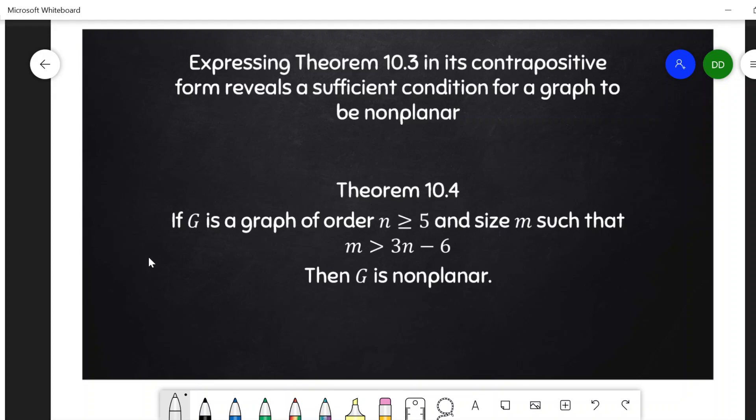So this is nice. In this case, in particular, we can show k5 is not planar. n is equal to 5. m is equal to 5 choose 2, that's 10. So 3n minus 6, in this case, is 9.